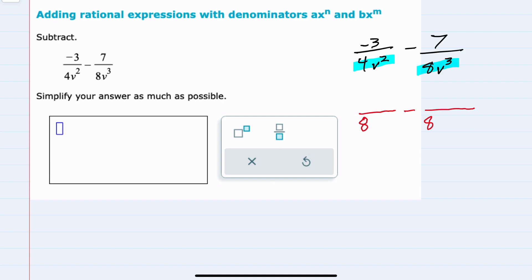And then for our variables, we have v² and v³. The lowest common being v³ means that there's no changes to make here on the right hand side. We already have that lowest common denominator of 8v³.